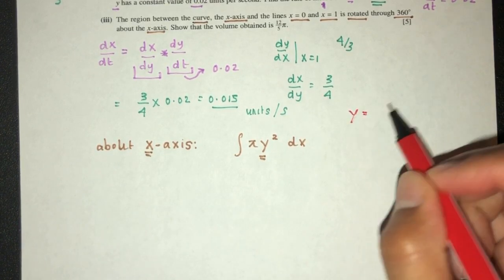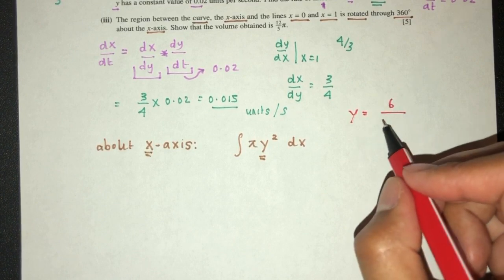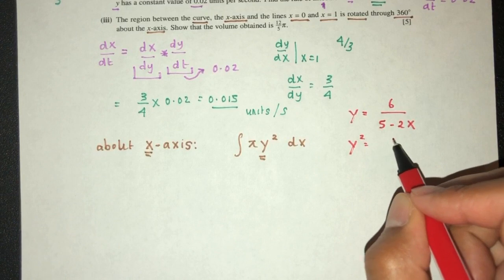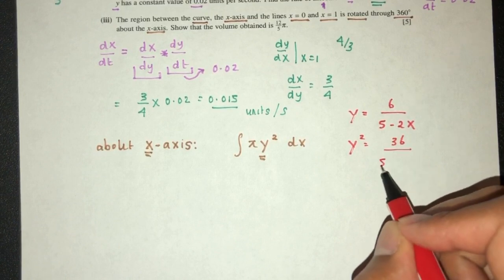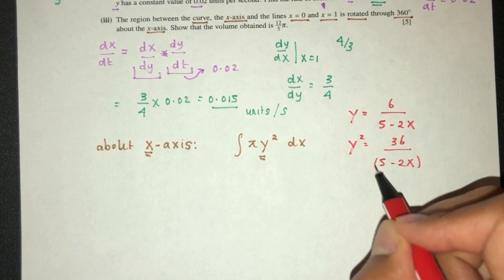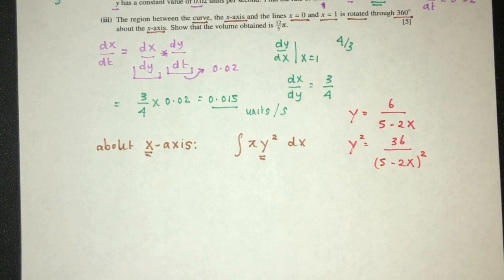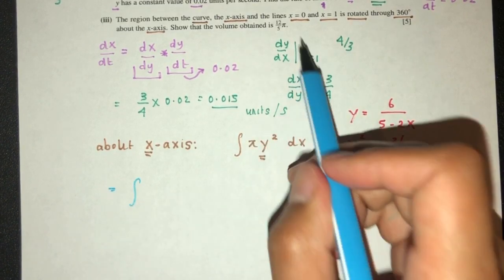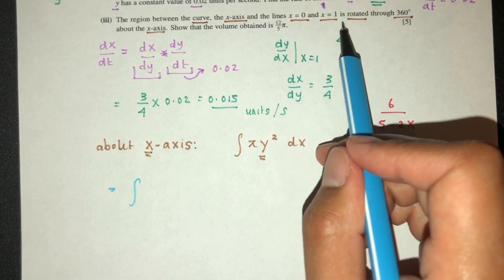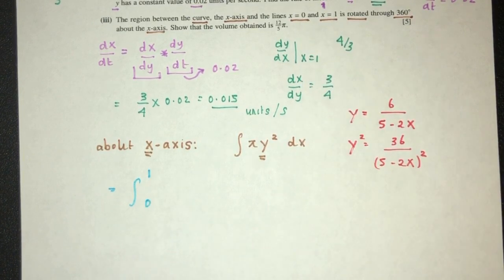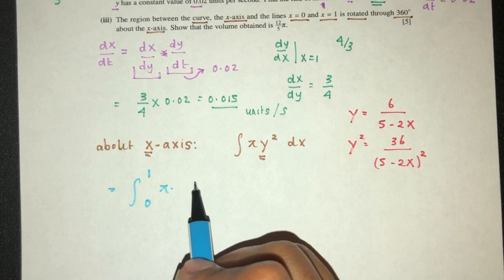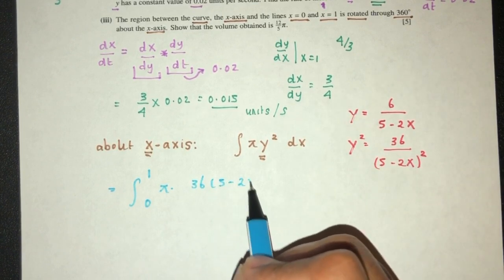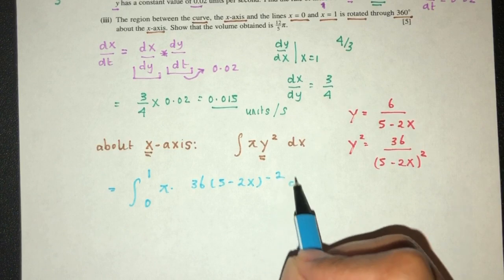So y² has to be 36/(5-2x)². Now we can just rewrite this. Limits will be between the values of x=0 and x=1. This will be 1, 0. π is π, y² is 36. Send this up. That will be (5-2x)^(-2) dx.